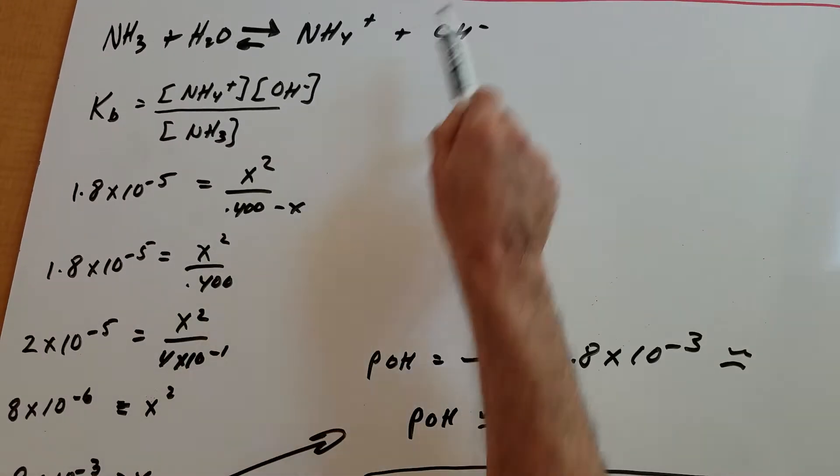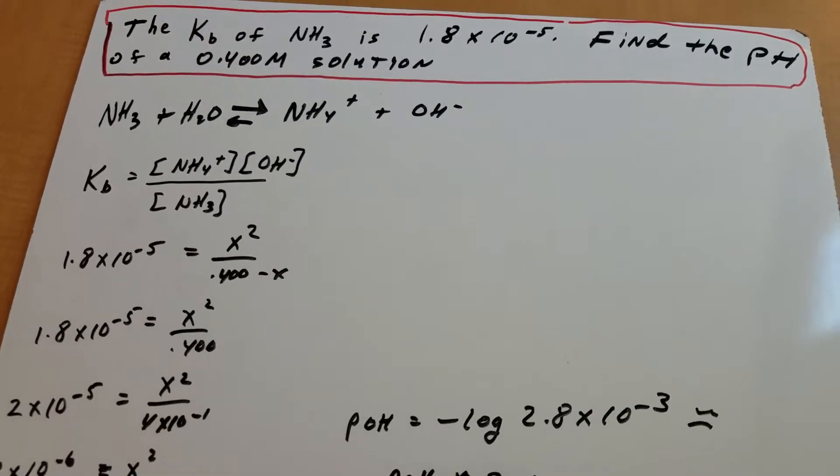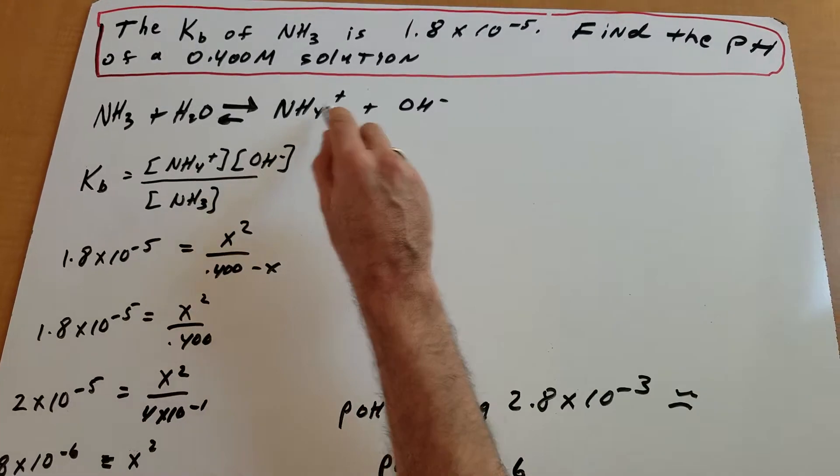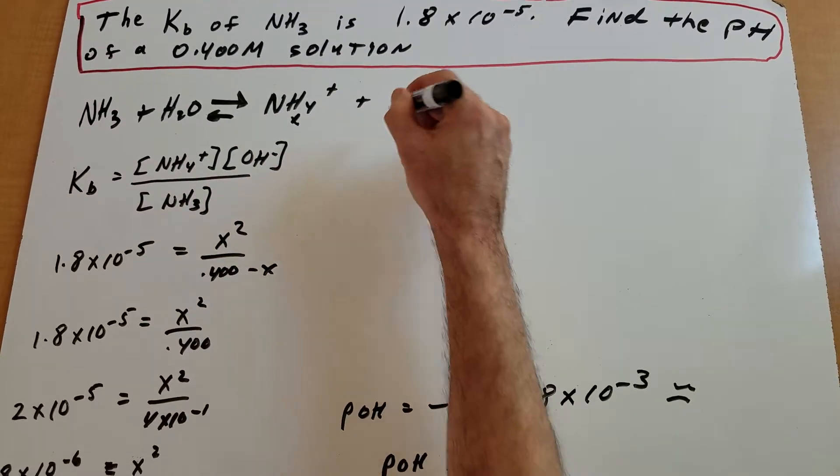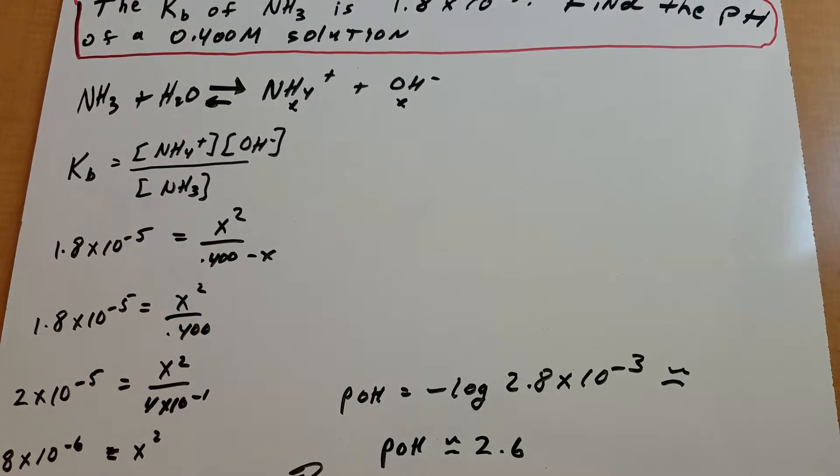Now we're going to drop some numbers in. The Kb we're given is 1.8 times 10 to the minus 5. This is an equimolar amount, so I can call this x and this x. So that's why the numerator is x squared.